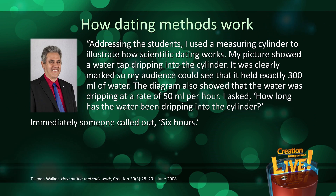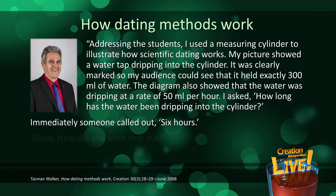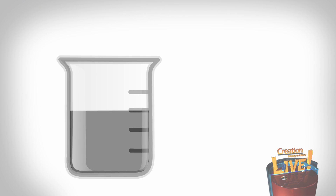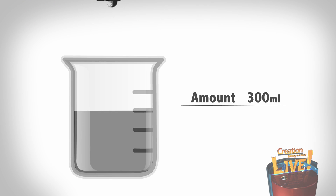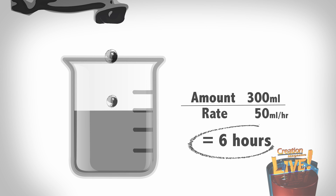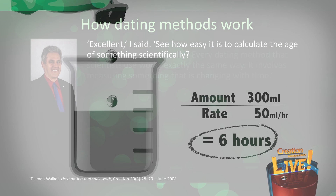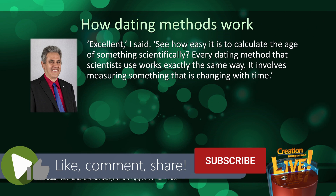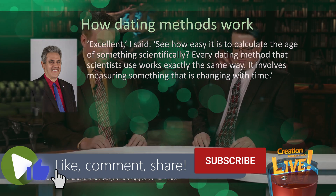Immediately someone called out, '6 hours.' Good. How did you work that out? By dividing the amount of water in the cylinder — 300 mL — by the rate, 50 mL per hour. Excellent, I said. See how easy it is to calculate the age of something scientifically? Every dating method that scientists use works exactly the same way. It involves measuring something that is changing with time.